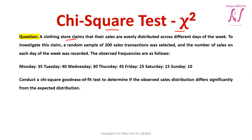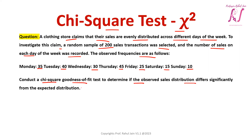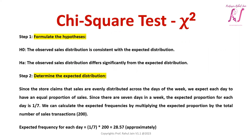Let's start. A clothing store claims that their sales are evenly distributed across different days of the week. To investigate this claim, a random sample of 200 sales transactions was selected and the number of sales on each day of the week was recorded. The observed frequencies are: Monday 35, Tuesday 40, Wednesday 30, Thursday 45, Friday 25, Saturday 15, and Sunday 10. Conduct a chi-square goodness of fit test to determine if the observed sales distribution differs significantly from the expected distribution.